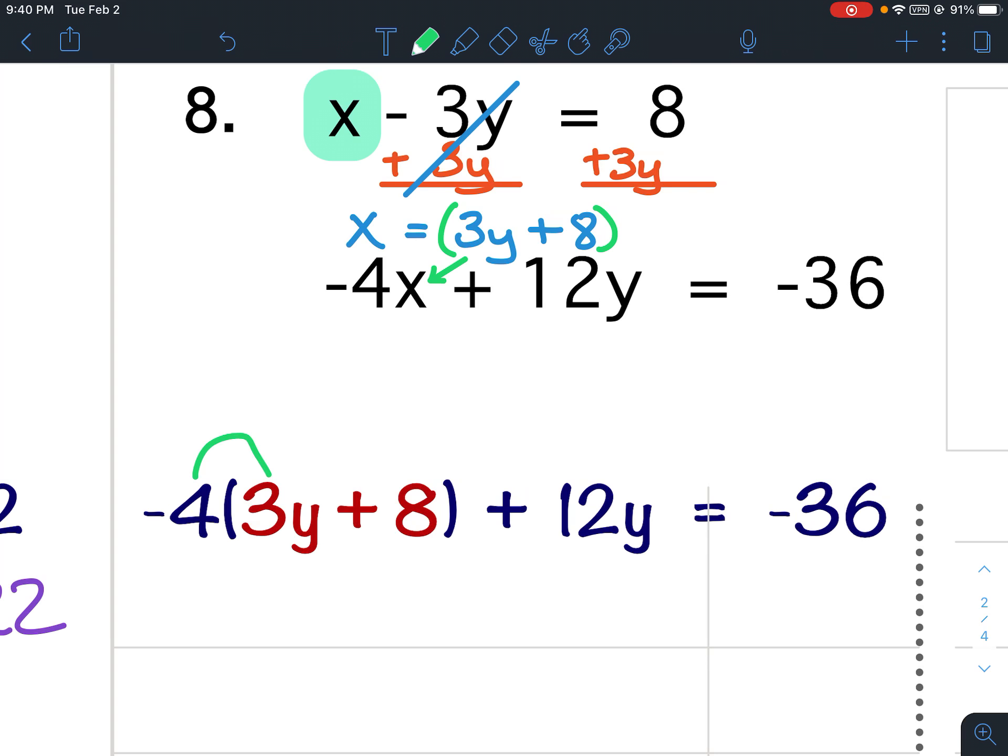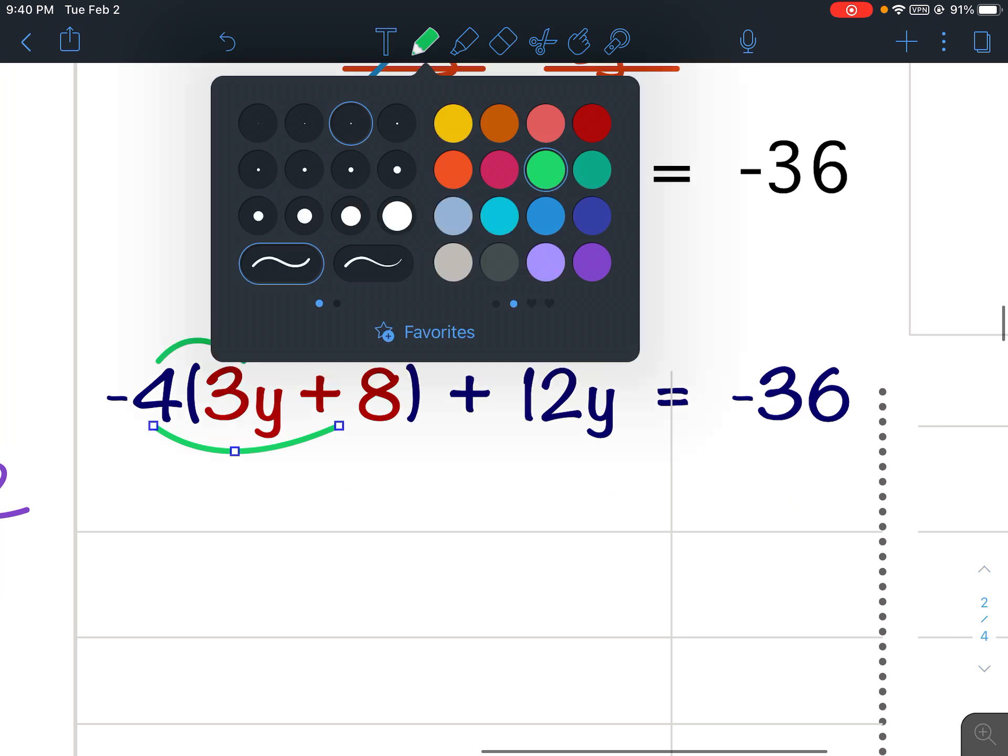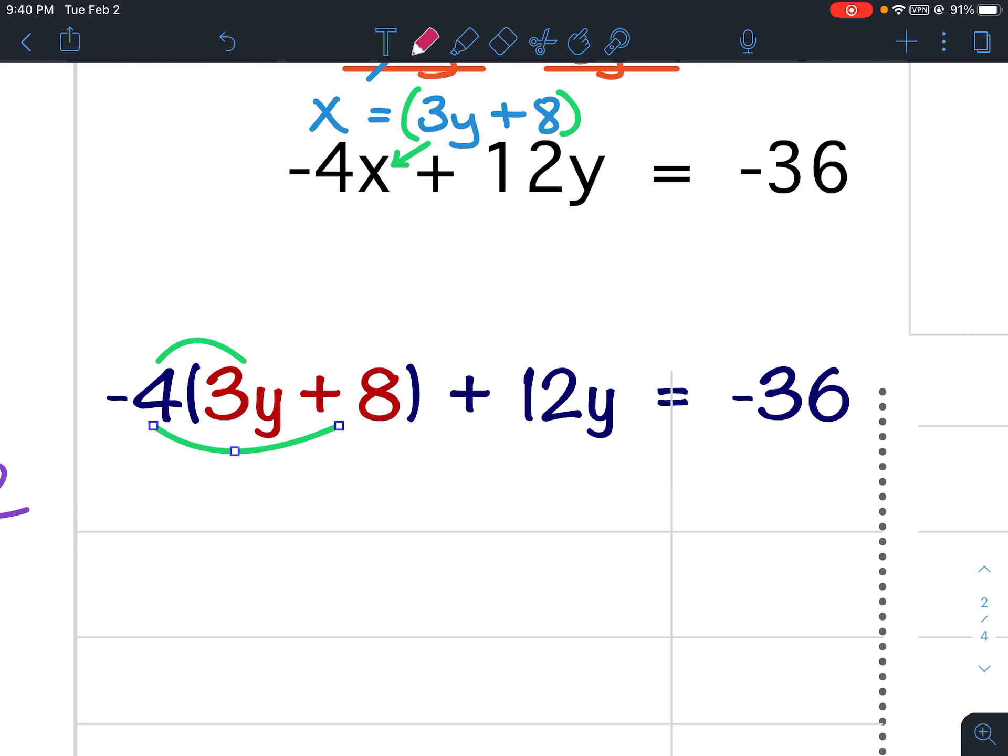All right, we're going to start with the distributive property. So negative 4 times 3 would give me negative 12y. Negative 4 times 8 would give me negative 32.